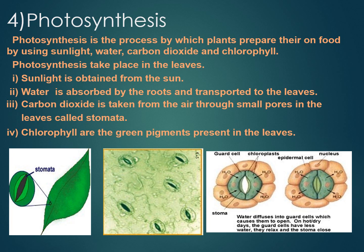Second is water. Water is essential for the process of nutrition. Plants absorb water from the soil. The water absorbed is transported to the leaves through pipe-like structures called xylem vessels. They form a continuous path or passage for water to reach the leaves. Plants also absorb nutrients along with water from the soil. These nutrients are present in the form of minerals dissolved in water in the soil.